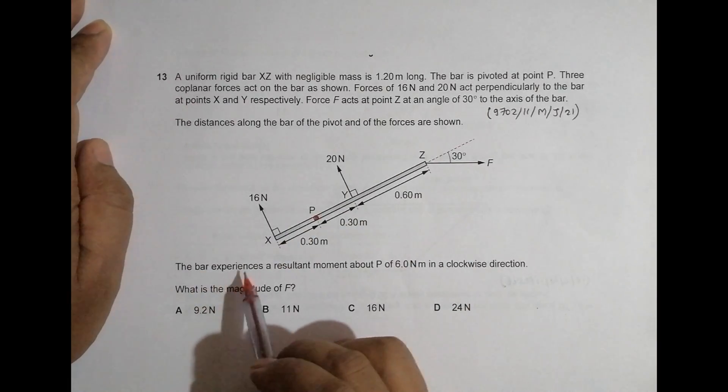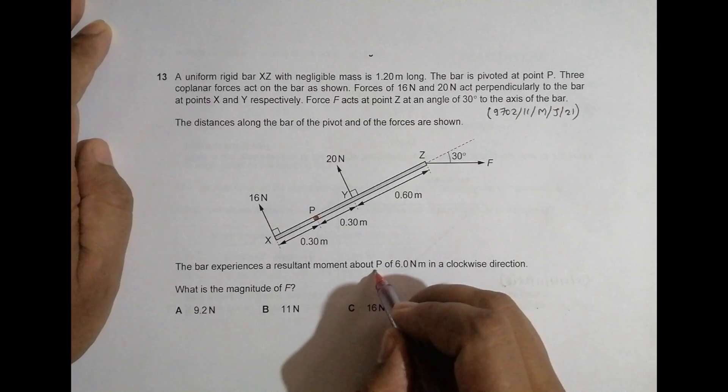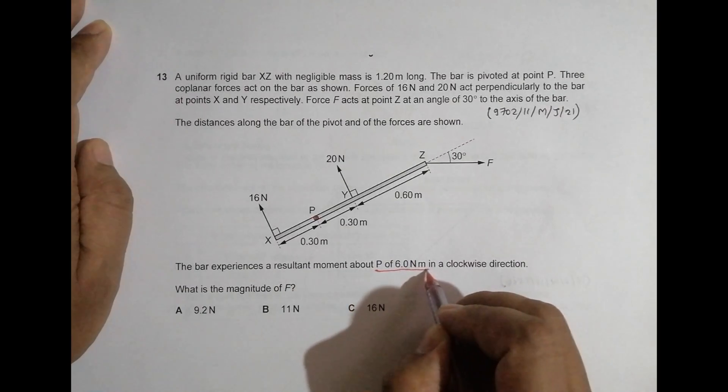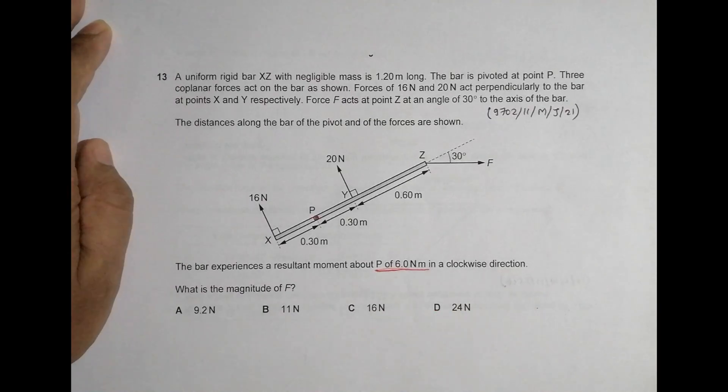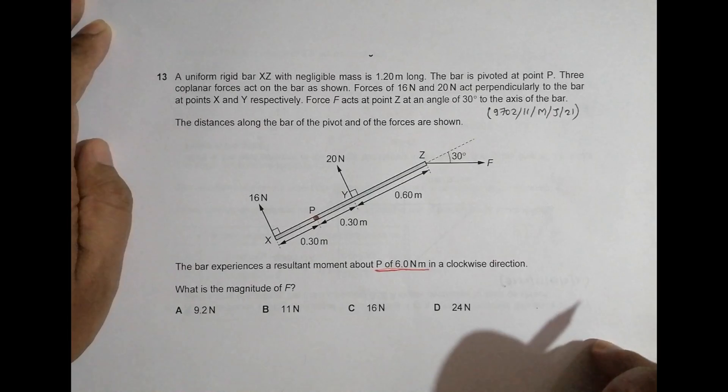The bar experiences a resultant moment P of 6.0 Newton meter, so this is the resultant moment or torque in the clockwise direction. What's the magnitude of F? So first of all, let us calculate the interaction of all the moments or forces or torques here.